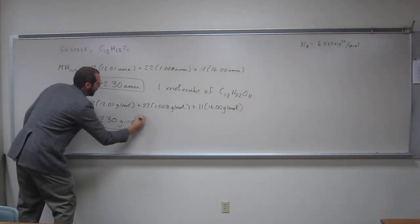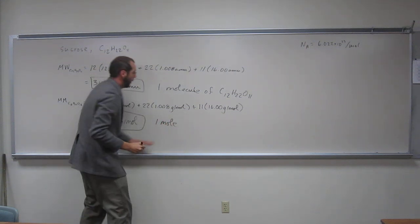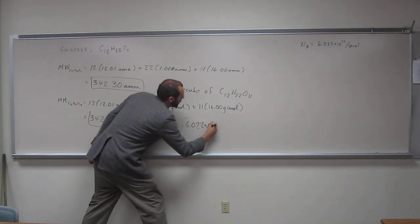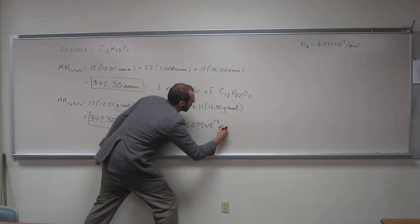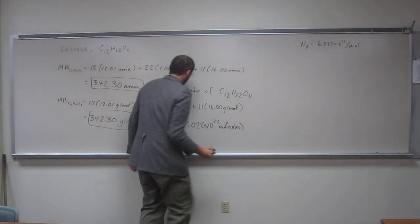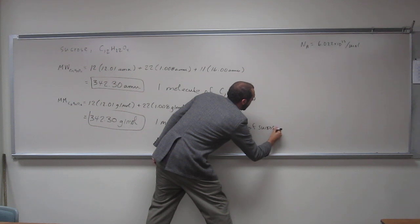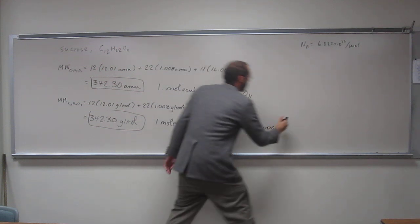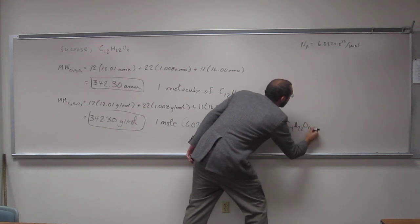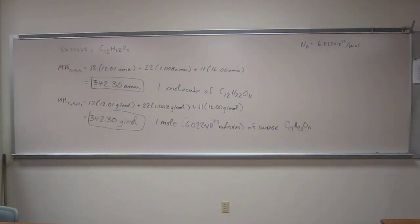And how much does one mole weigh? This is one mole. Or what does that mean? 6.022 times 10 to the 23rd molecules of sucrose, which is C12H22O11. Does that make sense? Just change the units?